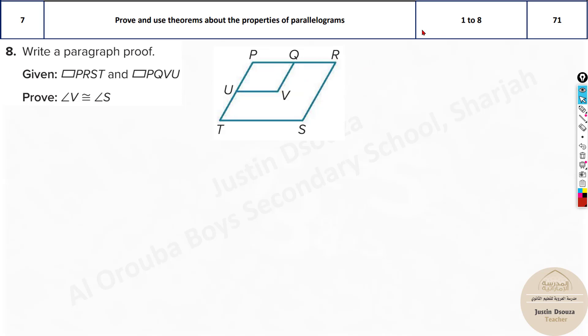Now the last one. There's only eight problems in this. This is the last one. Write a paragraph proof. For what? Now they have told P, R, S, T is a parallelogram and P, Q - the inner one and outer one are parallelograms. V and S. Where is V and S? This is the one. Yeah, obviously, because they are opposite angles. This must be equal to this. Is it? Yes, because this P is opposite to V. They are parallelograms, so they are equal. And even the outer ones are parallelograms, so they are equal. So opposite angles of a parallelogram are congruent. That's the main thing.